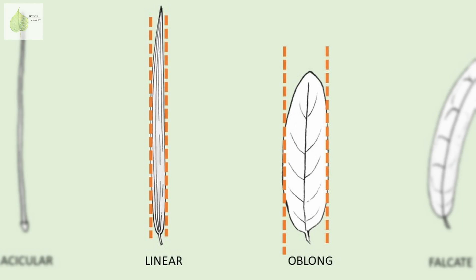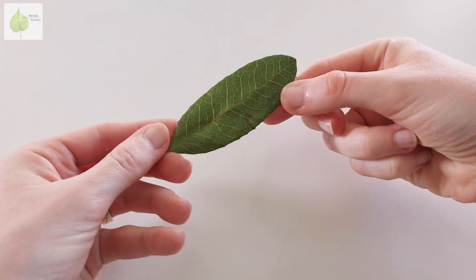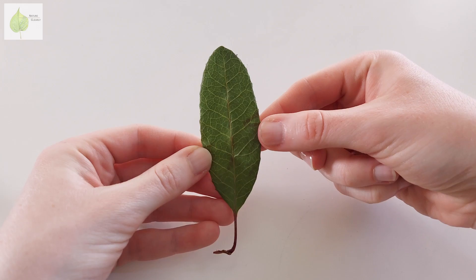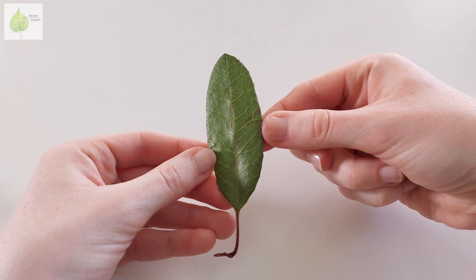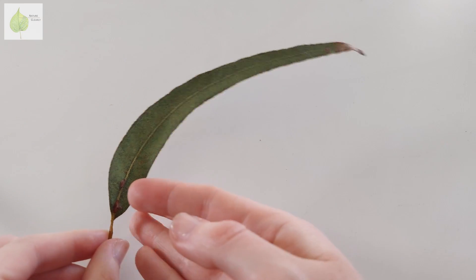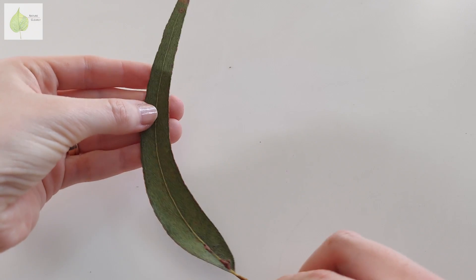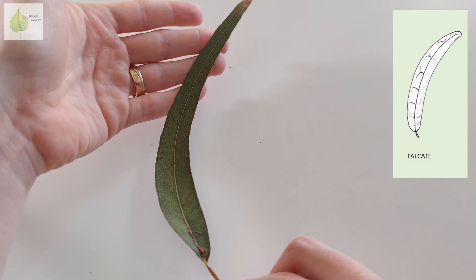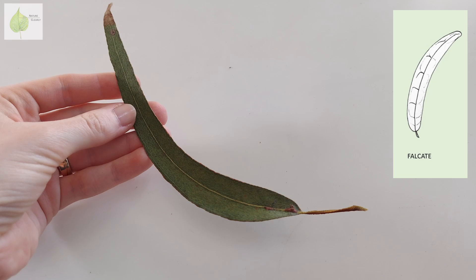If we shorten down the linear leaf, still keeping the parallel edges but making it only two to four times longer than wide, we get an oblong leaf. I didn't find any leaf I would strictly call oblong, but this heteromeles leaf is the closest — I would call it elliptical to oblong. For the last in the long-and-narrow category, we have this eucalyptus leaf, a beautiful representation of a falcate leaf, where its tip is curved to one side creating a hook or a beak.